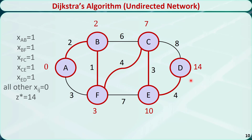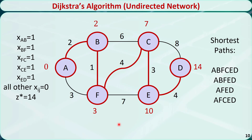The shortest path from A to D is A → B → F → C → E → D, with a distance of 14. This is just one of the shortest paths. We can use this algorithm to find other shortest paths — for example, A → B → F → E → D, and A → F → E → D, and A → F → C → E → D. They all have a distance of 14.